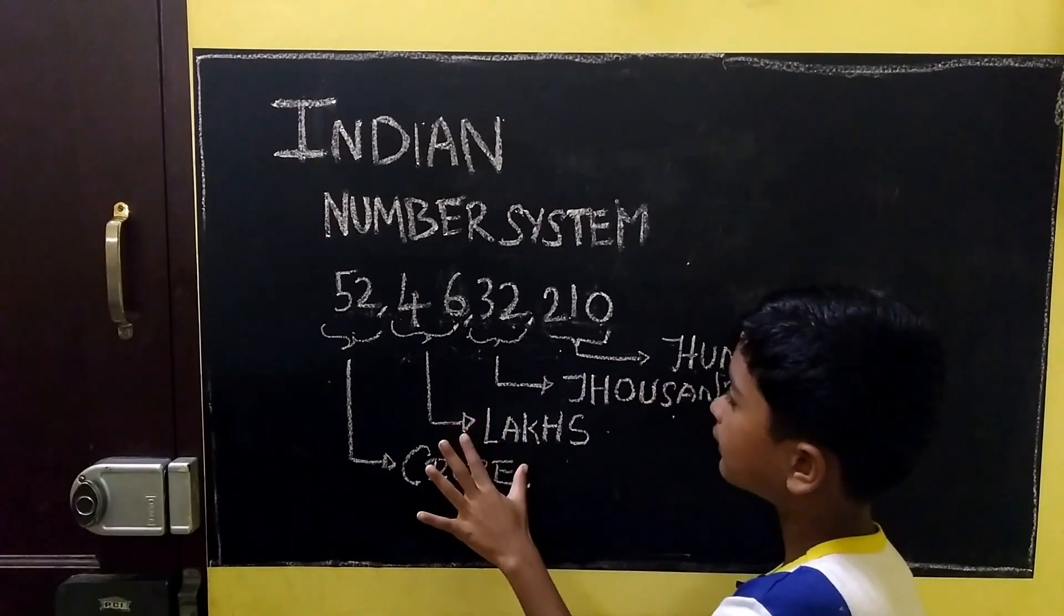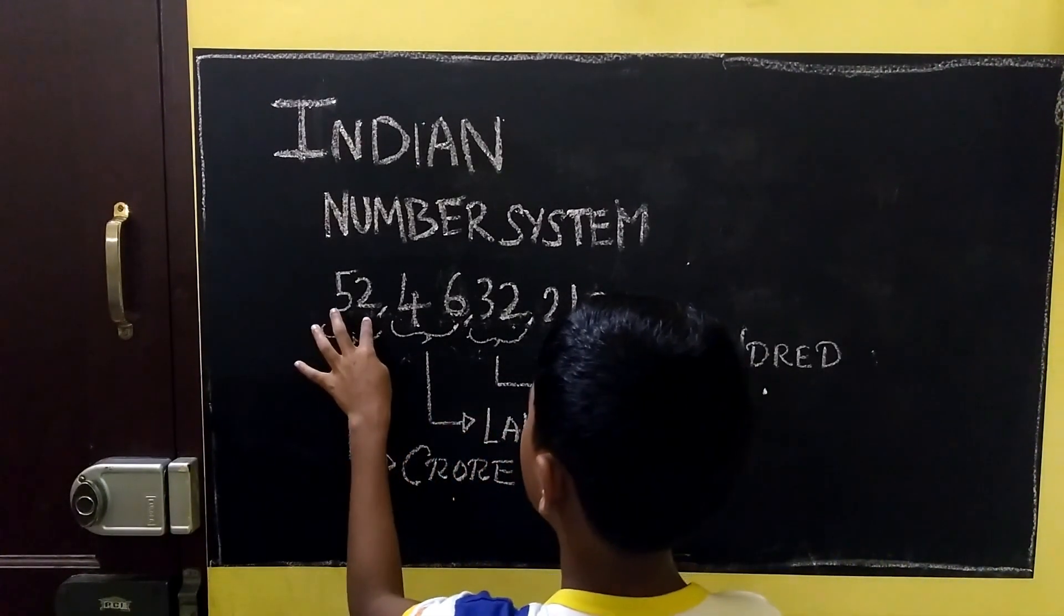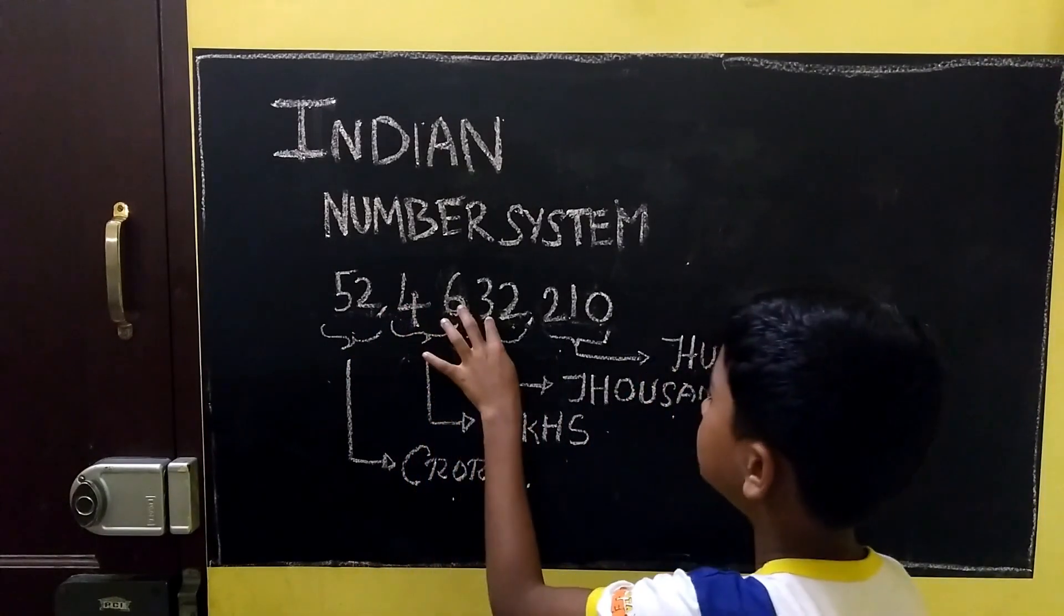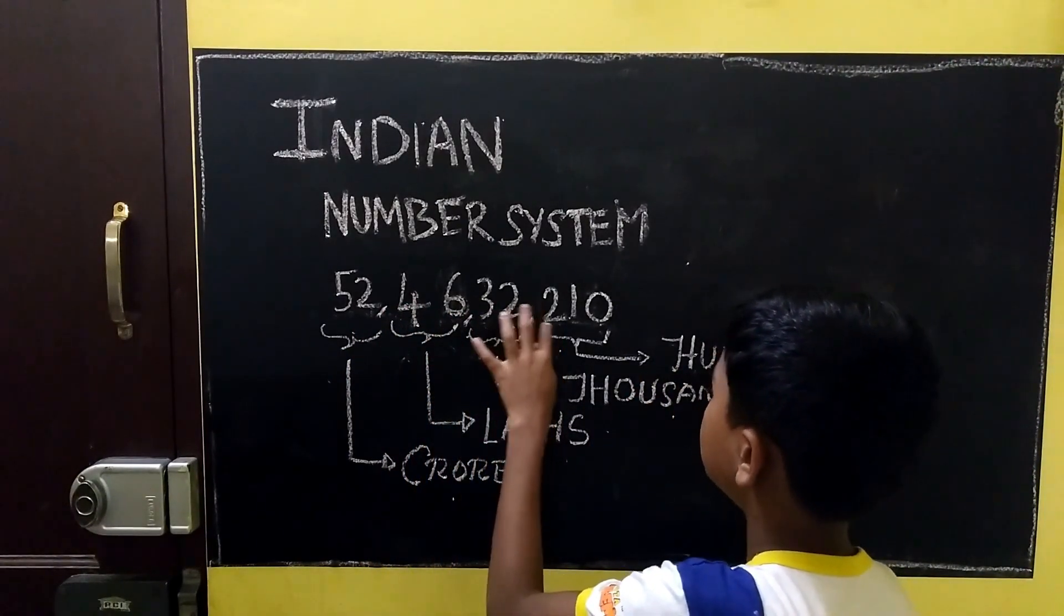Now, how do we have to read this number? 52 crores, 46 lakhs, 32,000 and 210.